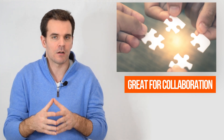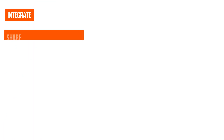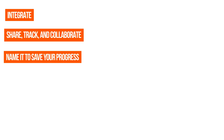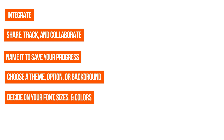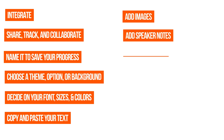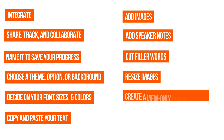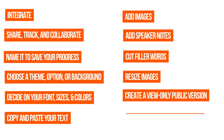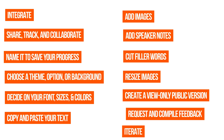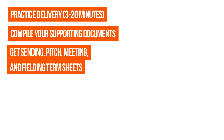When it comes to getting started with putting together your slides with Google Slides, some things to keep in mind are: integrate, share, track, and collaborate with members; name it to save your progress; choose a theme, option, or background; decide on your font sizes and colors; copy and paste your text; add images; add speaker notes to help you talk through it; go back and cut filler words; resize images to minimize file size; create a view-only public version to share with investors and advisors; request and compile feedback; iterate; practice delivering it as a pitch presentation — 3 to 20 minutes; compile your supporting documents; then get sending, pitching, meeting, and fielding term sheets.